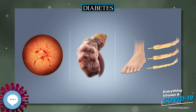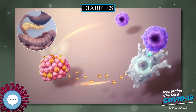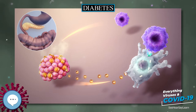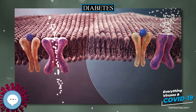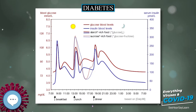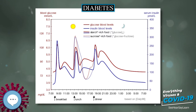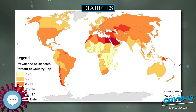People, usually with type 1 diabetes, may also experience episodes of diabetic ketoacidosis (DKA), a metabolic disturbance characterized by nausea, vomiting and abdominal pain, the smell of acetone on the breath, deep breathing known as Kussmaul breathing, and in severe cases a decreased level of consciousness.